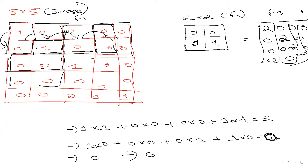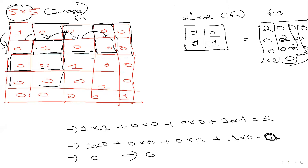So this is exactly what convolution means — and this is the mathematics behind the scene. If you start with a 5×5 image and use a 2×2 filter, what size matrix do you get at the end? Four by four. That's the resultant matrix.